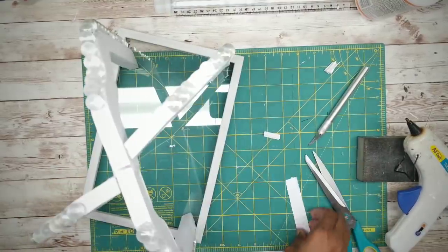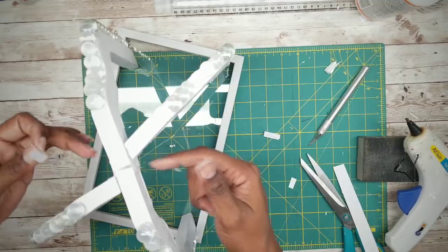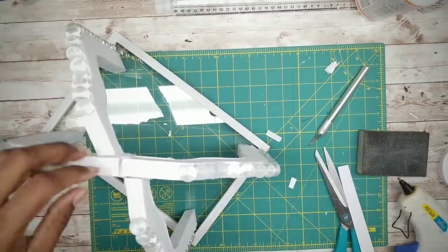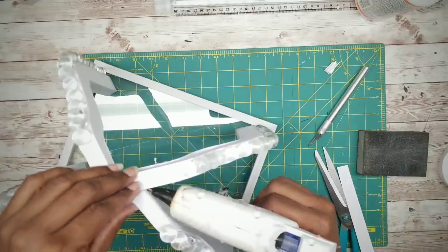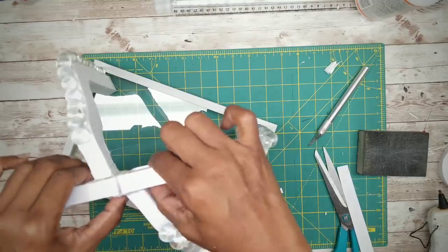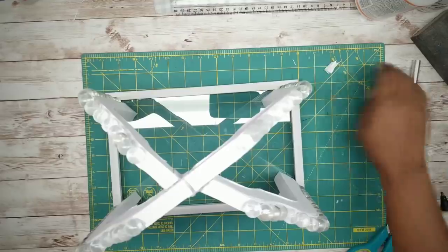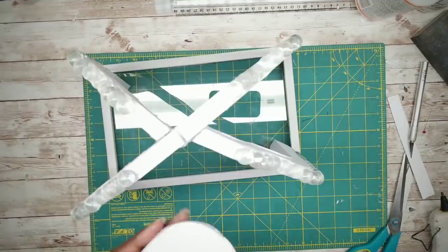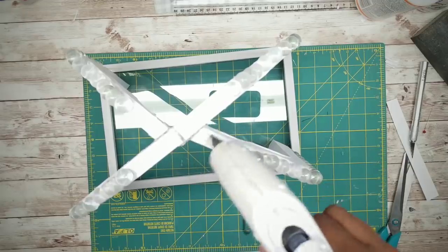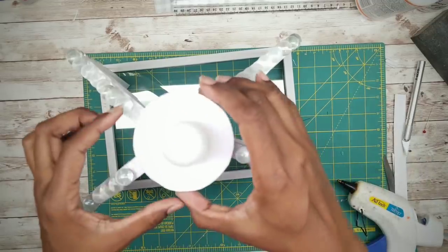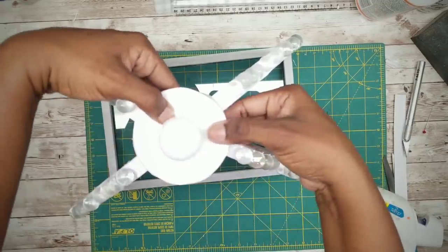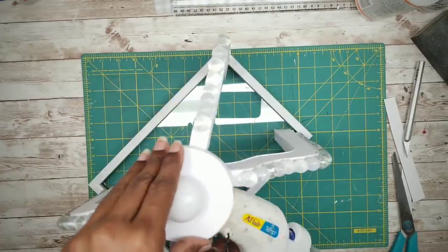Once everything is nice and bonded, I'm going to take some scrap pieces of that cardstock, fold it in half and glue them to the seams as reinforcement. Then I'm going to take that circle piece and apply it to the top center of that arch using hot glue. I'm going to reinforce that connection underneath by applying hot glue to the seams.